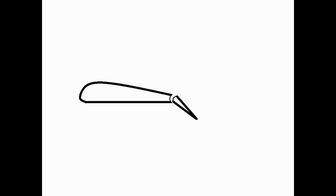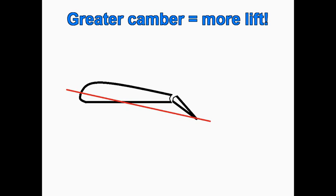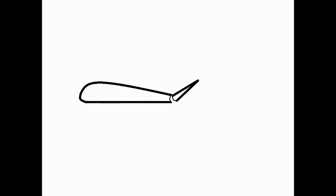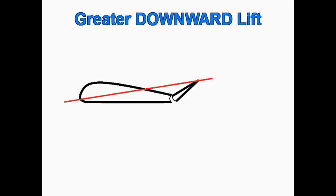If one aileron goes down, that changes the cord line so there's a greater camber on top of the wing, creating lower pressure and thereby more lift. If we put an aileron up, that lessens the cord line and the camber, creating higher pressure on the top and lower pressure on the bottom of the wing.